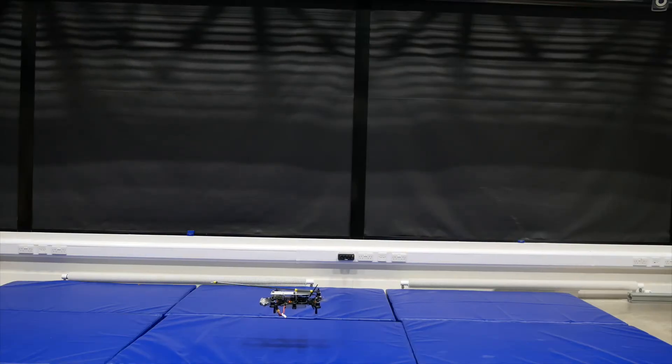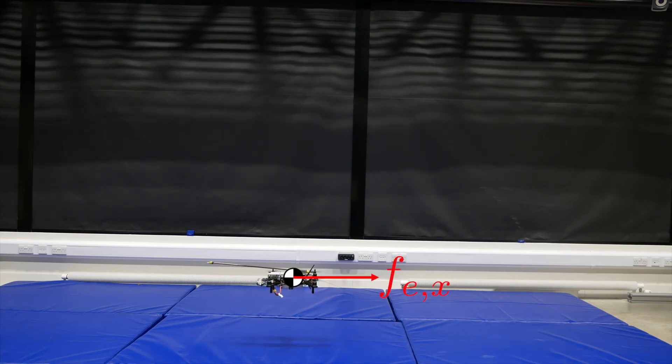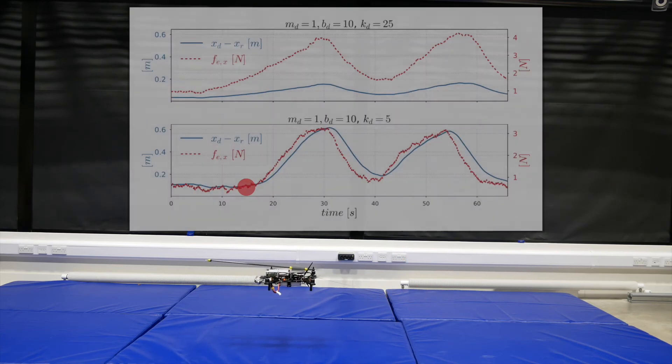The effect of tuning the virtual compliance parameters can be seen when our system is exposed to an external force. The virtual stiffness, K, of our admittance control scheme is modified, resulting in the two plots shown here.